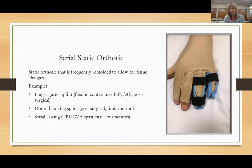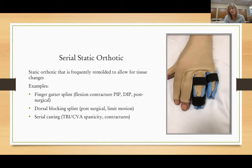The serial static orthotic, as you see in this picture, is a static orthotic that you can frequently remold to allow for tissue changes, improved range of motion, or changes in the surgeon's guidelines. Examples include a finger gutter splint for flexion contracture of the PIP or DIP joints, a dorsal blocking splint post-surgical to limit motion, or serial casting following a TBI or CVA for spasticity or contractures. The gentleman in the picture has cognitive deficits — I could quickly put the splint in hot water, straighten it a bit more, and it progressively improved his PIP joint extension. He had an ulnar nerve injury which led to PIP flexion contractures, and I also use serial casting frequently for those.